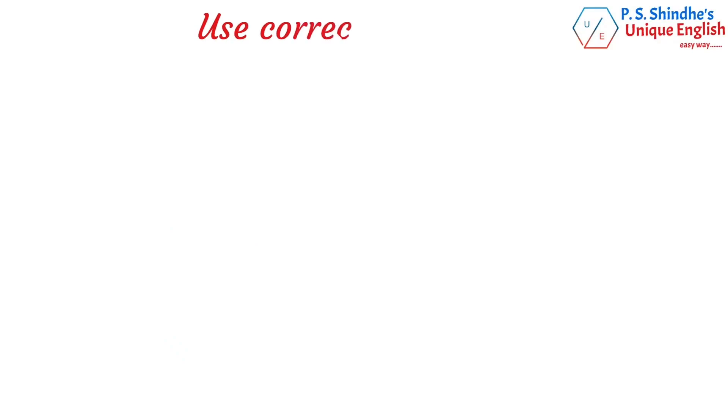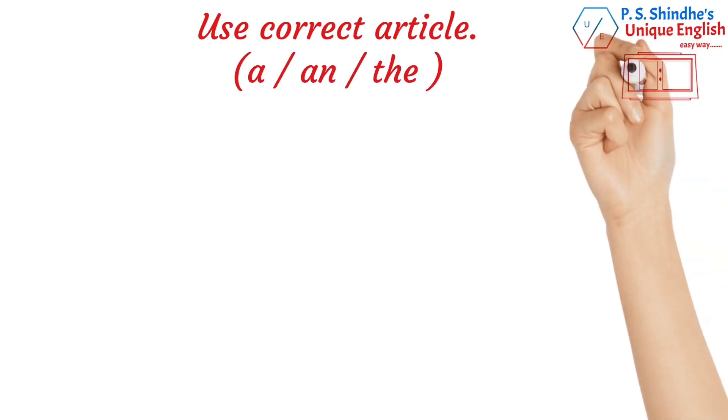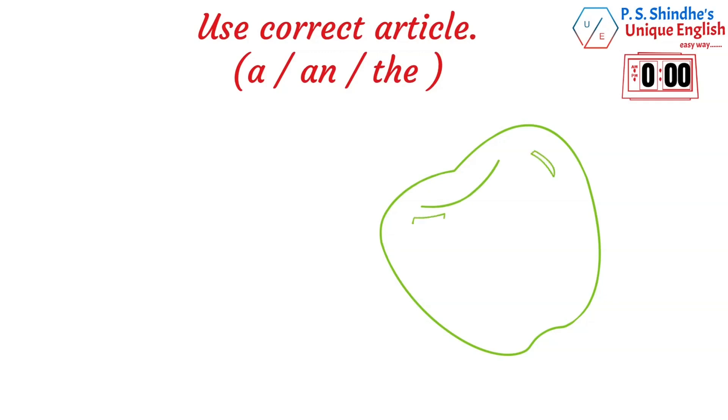Now, let's practice using articles in a fun way. We'll give you a noun, and you have to tell whether to use a, an, or the before the 6 seconds timer stops and displays the answer with an explanation. For example, if we say apple, you would say an apple. Are you ready? Let's go.